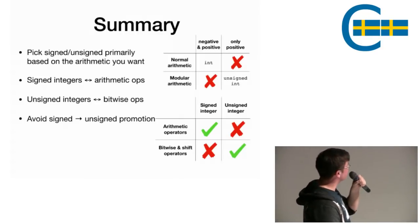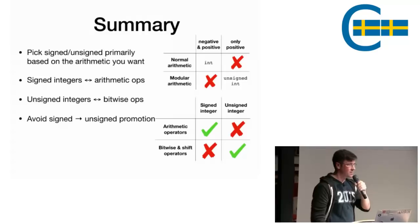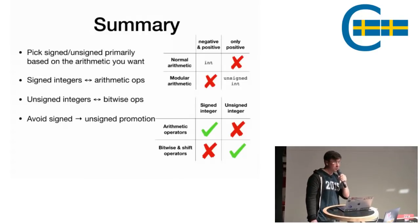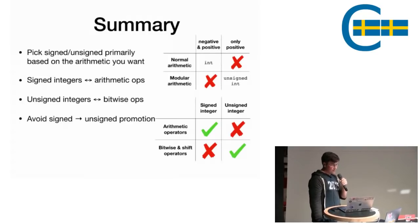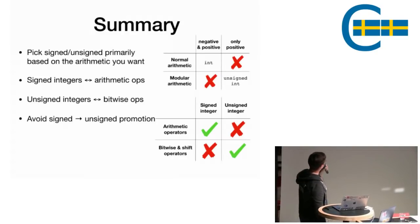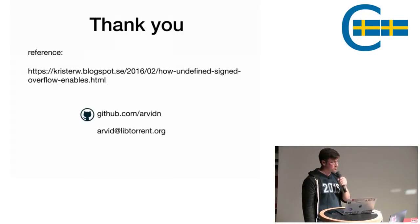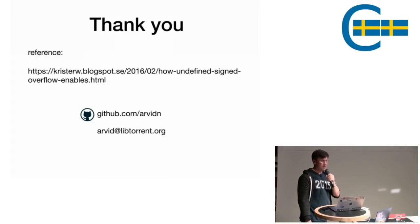All right. So to summarize, this is the takeaway. These two tables. Use signed integers if you want normal arithmetic. If you want modular arithmetic, which you do sometimes, use unsigned int. Use arithmetic operators on signed types. Use bitwise operators on unsigned types. And don't mix them the other direction. And avoid signed to unsigned promotion, because that typically leads to problems. That's all I got. Oh, by the way, that's a good blog post that digs deeper into the actual optimizations that GCC does, where it assumes that you're not gonna cause overflows. That's an interesting read. All right. Thank you.